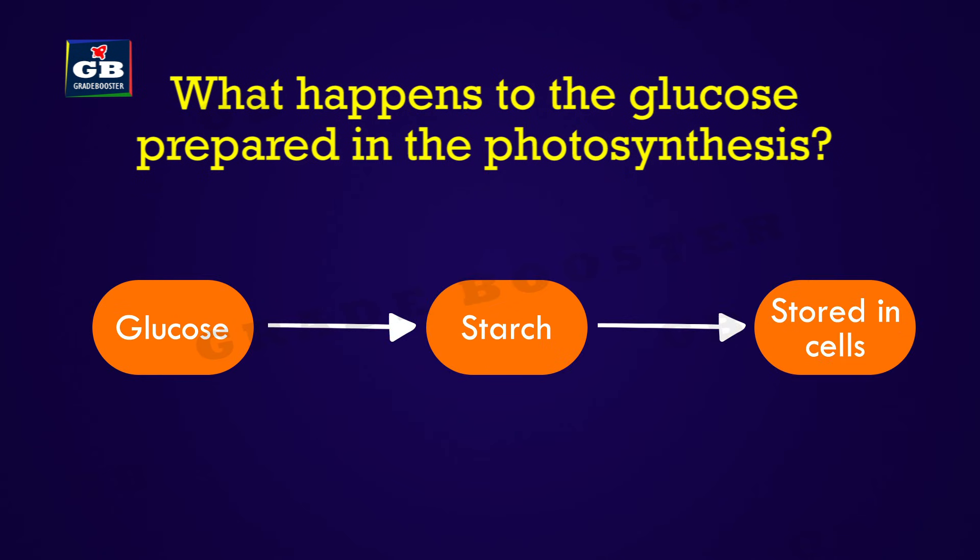The glucose that is produced in photosynthesis is converted to starch and stored in the plant tissues.